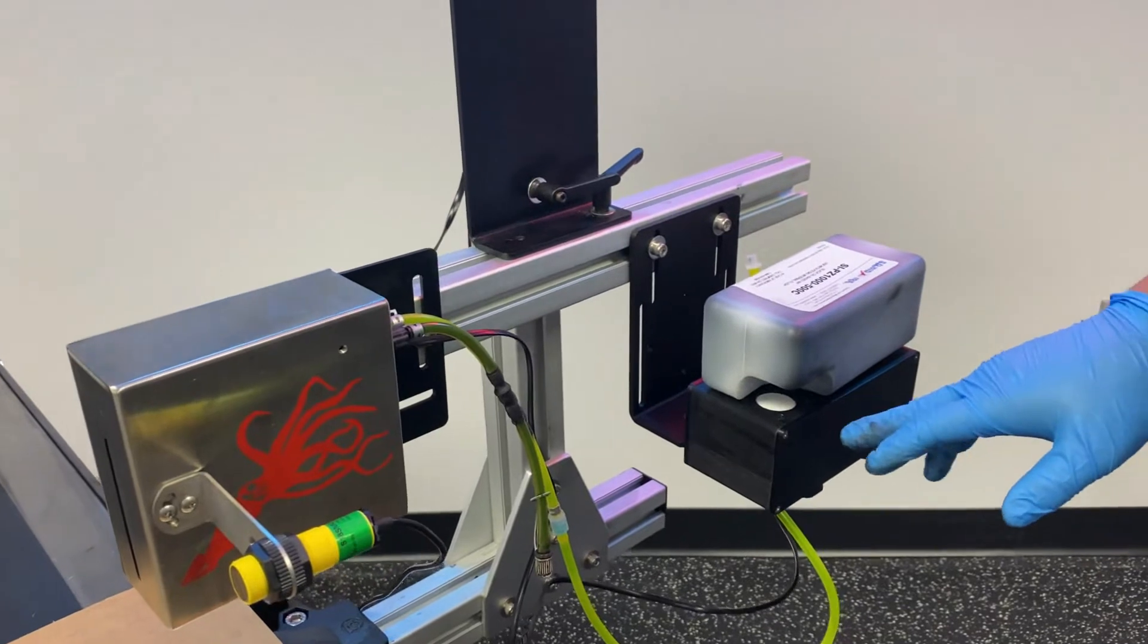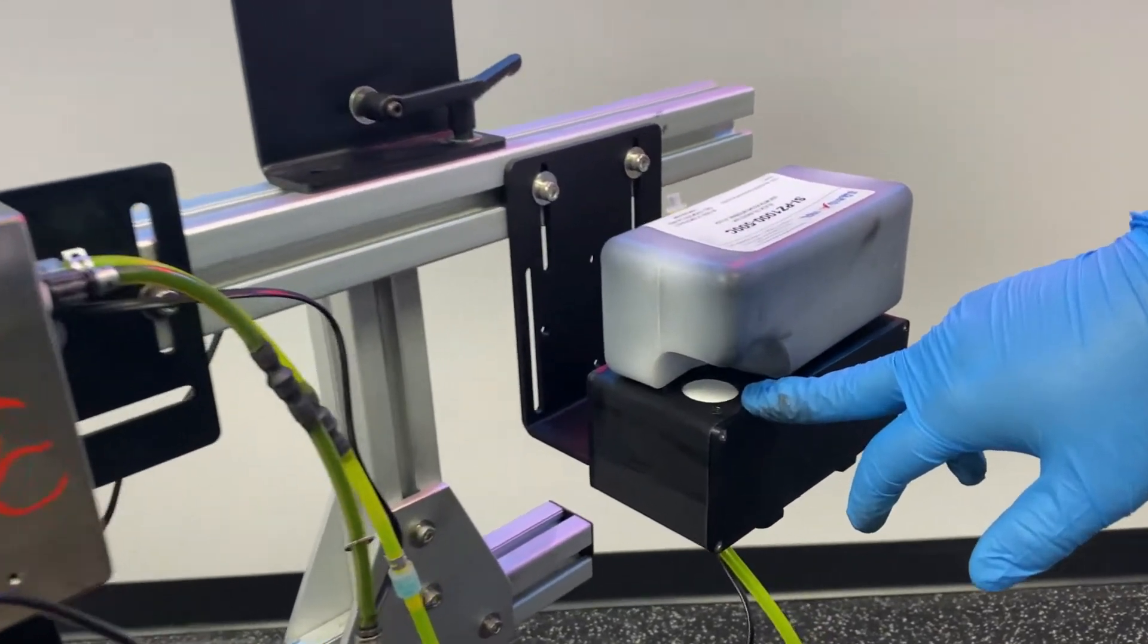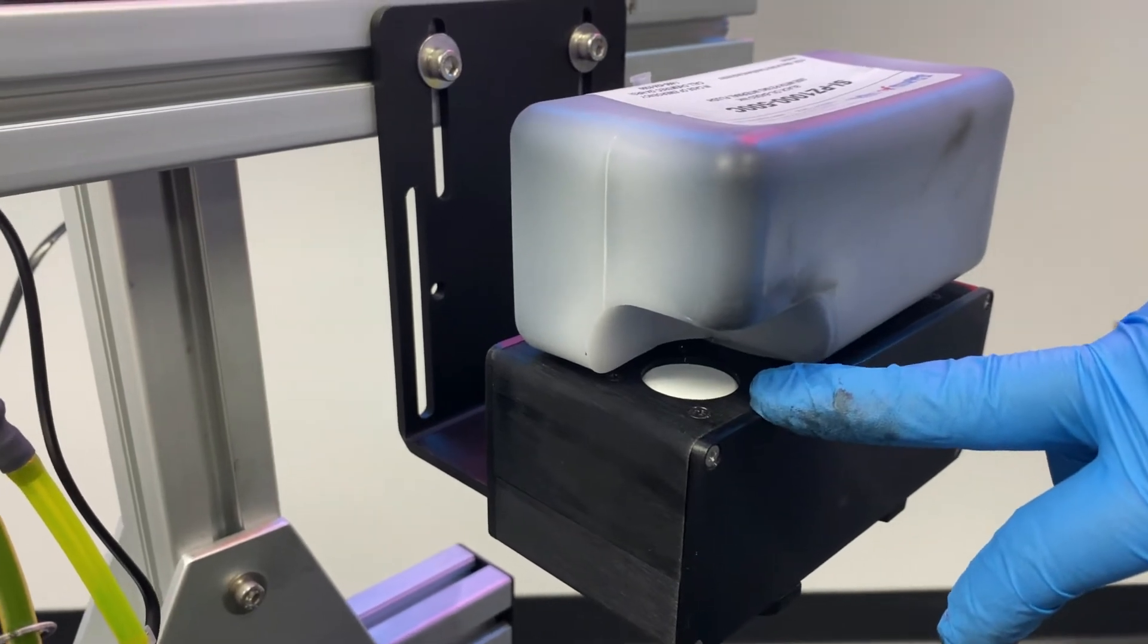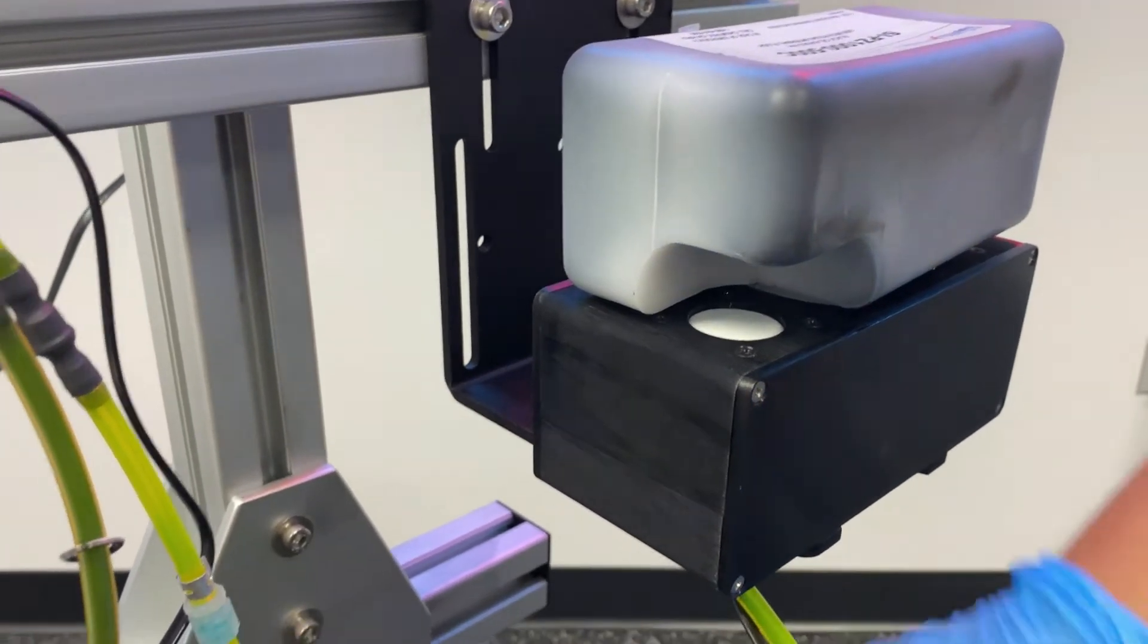In order to prime the printhead, we're going to utilize the priming bulb on the ink reservoir here. We're going to try to force as much of that air that's in this ink line and in the print engine out of the output check valve or the priming check valve.